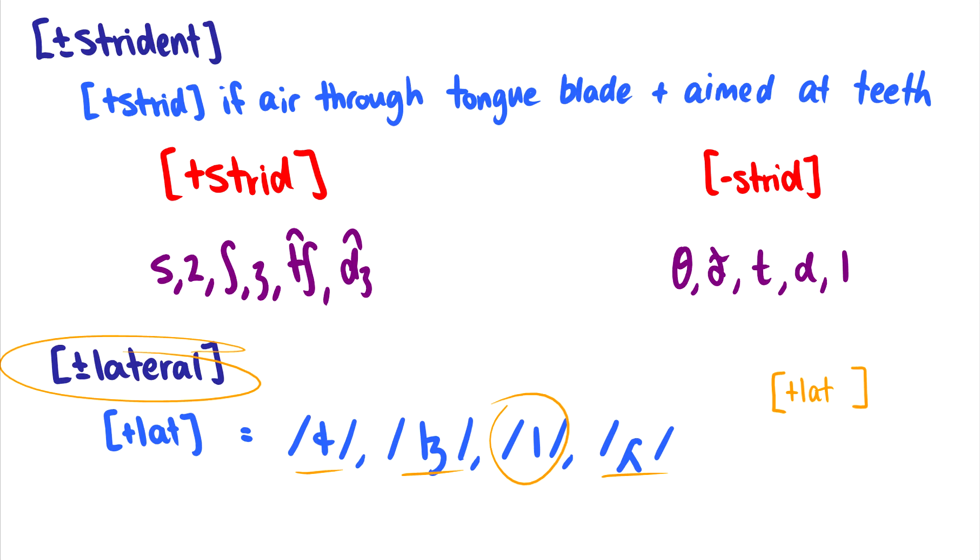So if we're talking about l, we include just that feature, because that's all we need to pinpoint that l. Okay, so those are coronal features. If a sound is coronal, and if it has the unary feature coronal, then we can list these four features and give it plus or minus values.